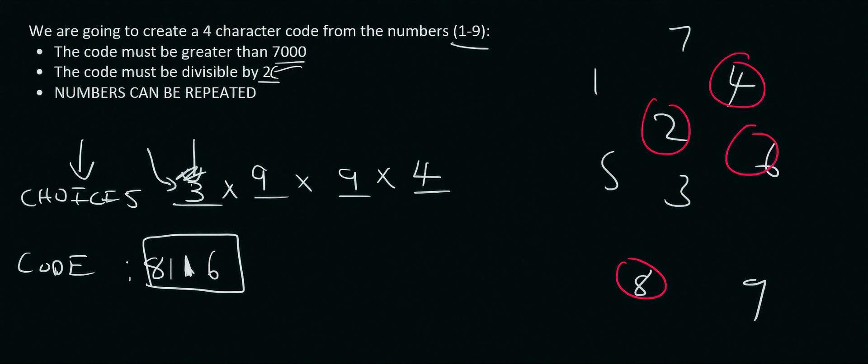8, 1, 1, 6 is one of the codes. But if we want to know the total number of combinations that are possible, then you multiply these four together. And that's going to give us a total of 972. So there are 972 different codes that you could make.